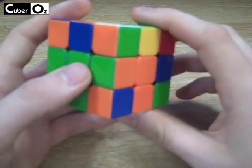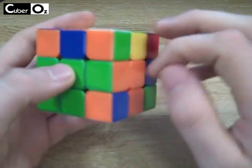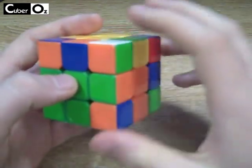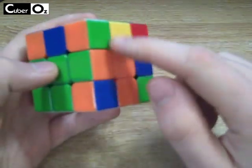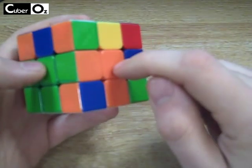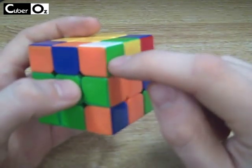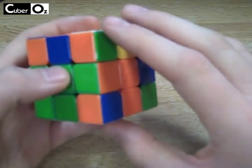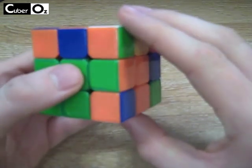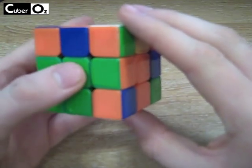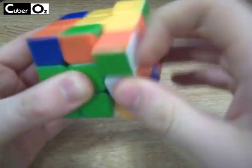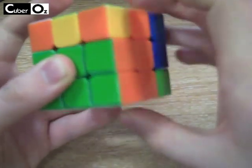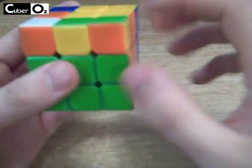There will be some algorithms which are more helpful than using intuitive. This one is a good example where the edge is already in place and the corner is above it but the colours are swapped. What you want to do here is the R U R' U' move three times. And that will insert it as such.